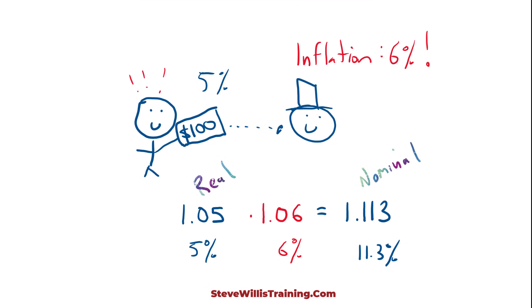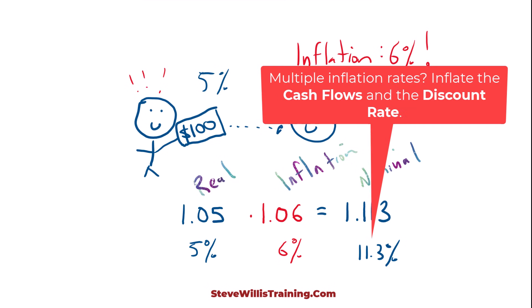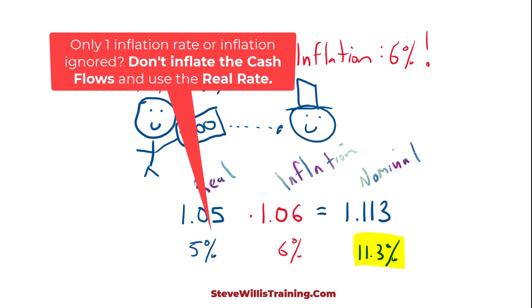If you are solving an investment appraisal problem, and the question mentions multiple inflation rates — for example, the price will increase at 5%, variable costs will increase at 6% — make sure that your discount rate is the nominal rate. If the problem does not mention inflation, or they just give one general rate, then we can use the real rate.